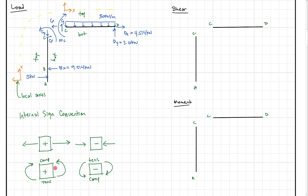The last thing we need is the shear sign convention — positive shear is down on the right side and up on the left side; negative is the opposite. Looking at the moment at C, it's on the right side of the cut and it's causing tension on the bottom and compression on the top, so that's going to be a positive moment if that's what we work out to.